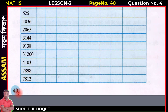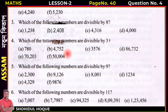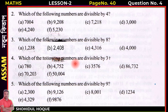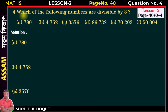Here, page number 40, question number 4. Which of the following numbers are divisible by 3? I will tell you which of the following numbers are divisible by 3. This number is divisible by 3 — I will divide through this number.